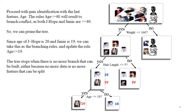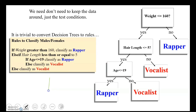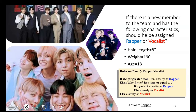We don't need to keep all the data — just the test conditions as provided on the right side of the slide. It makes sense to convert the decision tree to rules, and this decision tree equals a set of rules. Applying these rules to a new member with those characteristics, the answer is rapper. This illustrates the usefulness of decision trees as a machine learning algorithm for decision making.